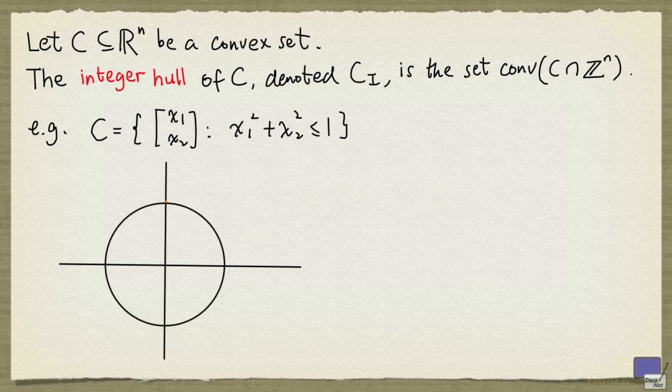Now the integral points in C are the following: (0,1), (0,0), (1,0), (-1,0), and (0,-1).